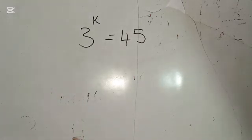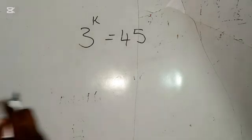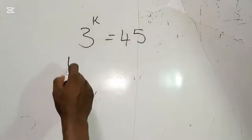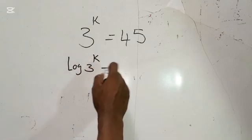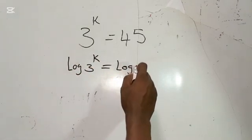Now, the first step is to take the log of both sides. So we have log 3 to the power of k is equal to log 45.